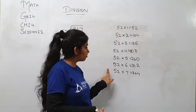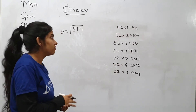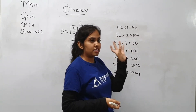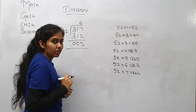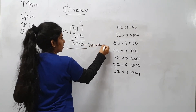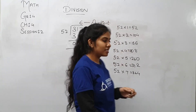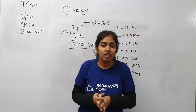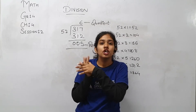So it is not possible to have just 2 digits here; 3 digits is needed. So 52 sixes are 312. 317 minus 312: 7 minus 2 is 5, 1 minus 1 is 0, 3 minus 3 is 0. So in this way you are supposed to solve. So 5 is our remainder and 6 is our quotient.